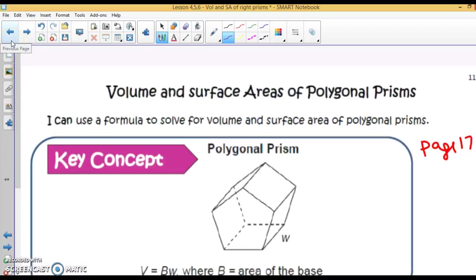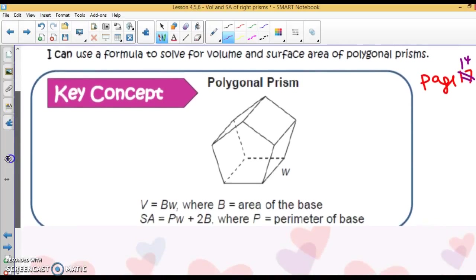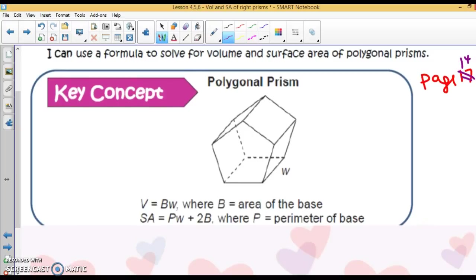Alright. Turn in your note packet to page 14. We're talking about today the volume of a right prism. This is on your formula sheet. Volume is capital B times W, where capital B is the area of the base. This is my base. And W is the width, the distance between the two bases. So you are using this formula for volume of every right prism.